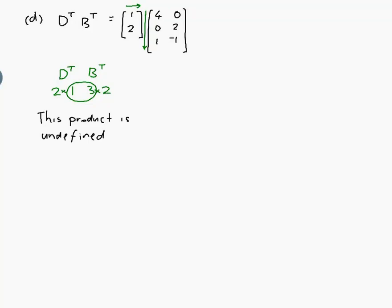What have we got? B transpose D transpose. So that would be equal to 4, 0, 1, 0, 2, minus 1, times 1, 2. Now let's check. The number of spaces across in the first one should be equal to the number of spaces down in the second. Yes, it is. So this one is possible. B transpose is 3 by 2, D transpose is 2 by 1, so yes, they do match.